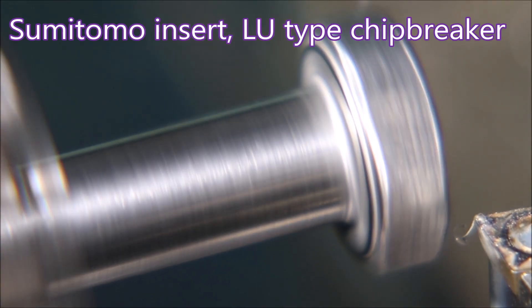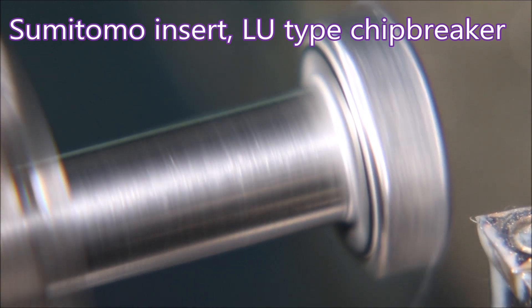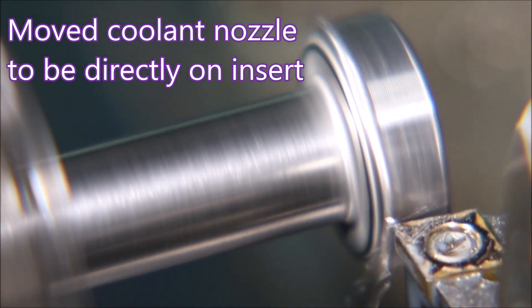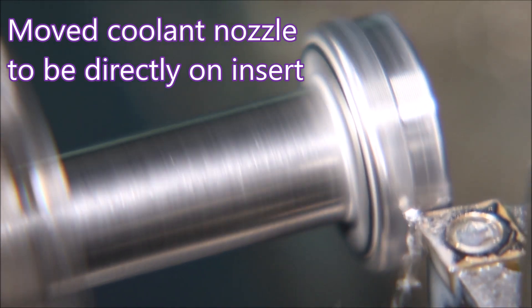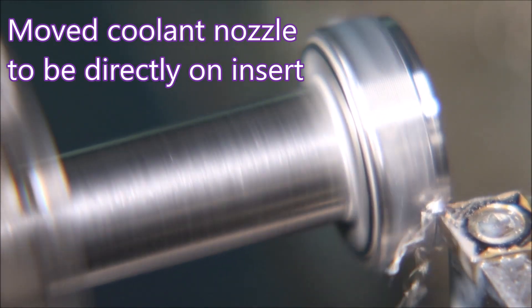You can see I'm using a Sumitomo LU type chip breaker which is a molded insert, and I was using an FC ground insert but I'll show you the difference in another video.